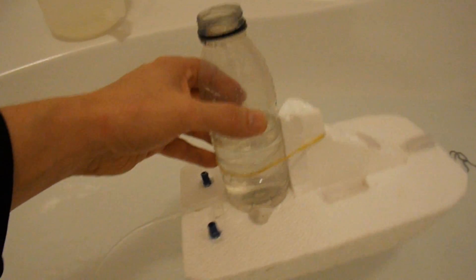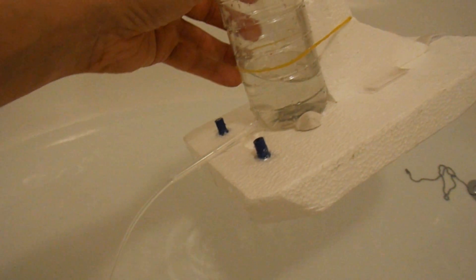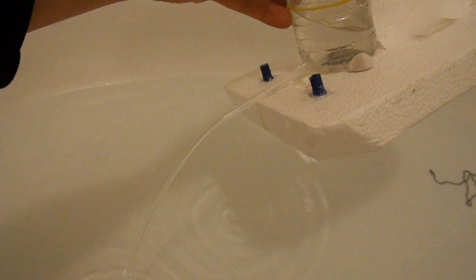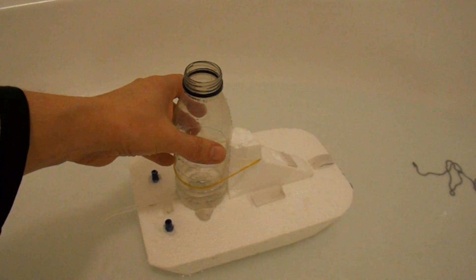So, quick summary. What have we got? We've got a polystyrene boat with a bottle on it, with a pipe in the bottom. And the water running out of it is enough to push the boat forwards.